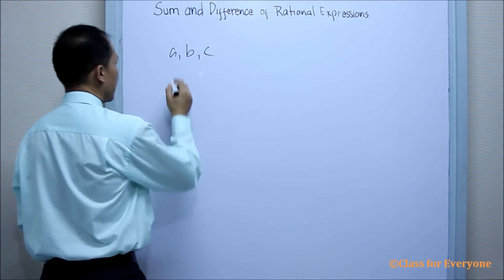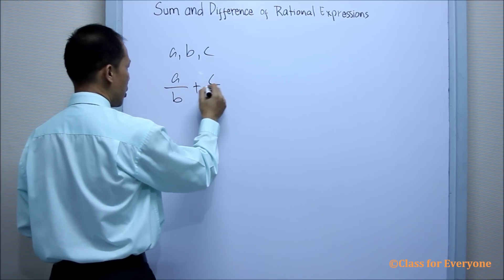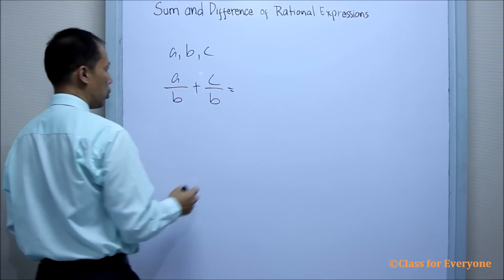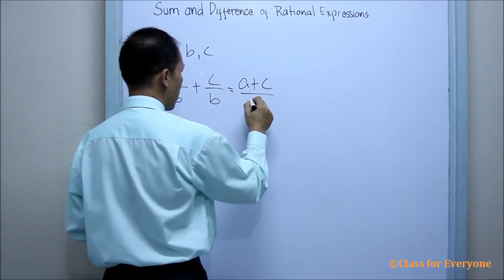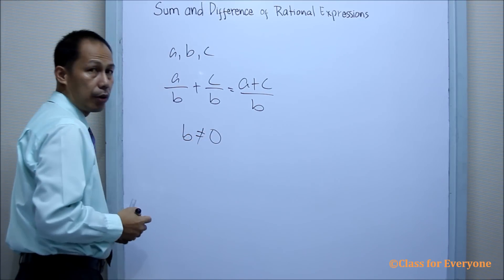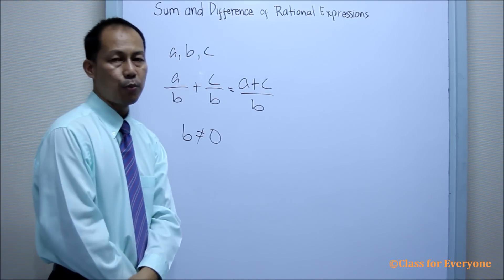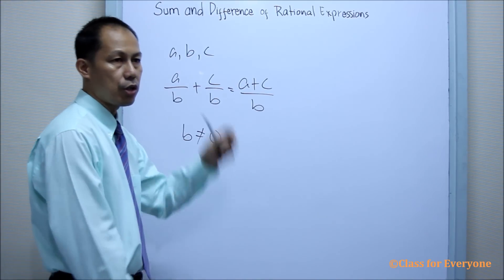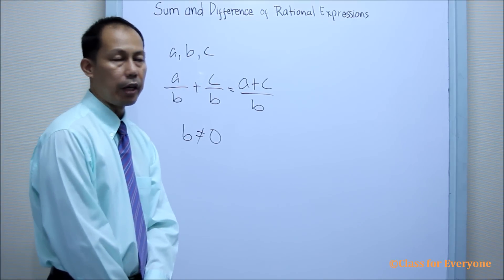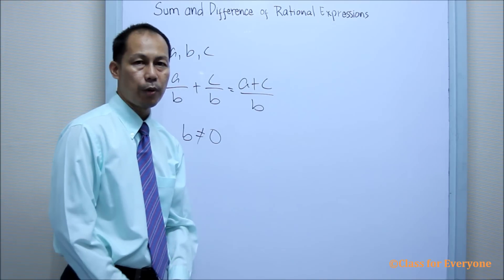Now, if A over B plus C over B, it is equal to A plus C over B, provided that B is not equal to zero. Now, if we are going to change this A, B, and C into an expression, this will be a rational expression. And this will also be used in finding the sum and difference of rational expressions.